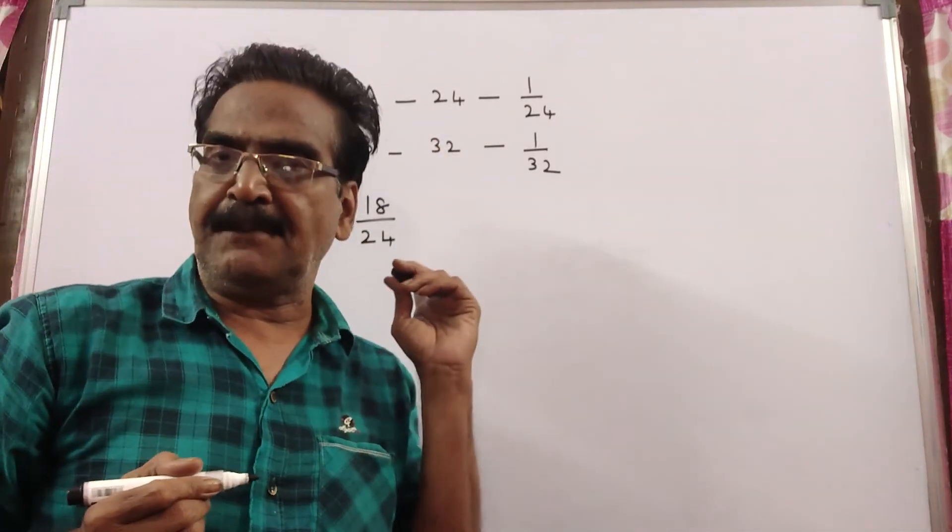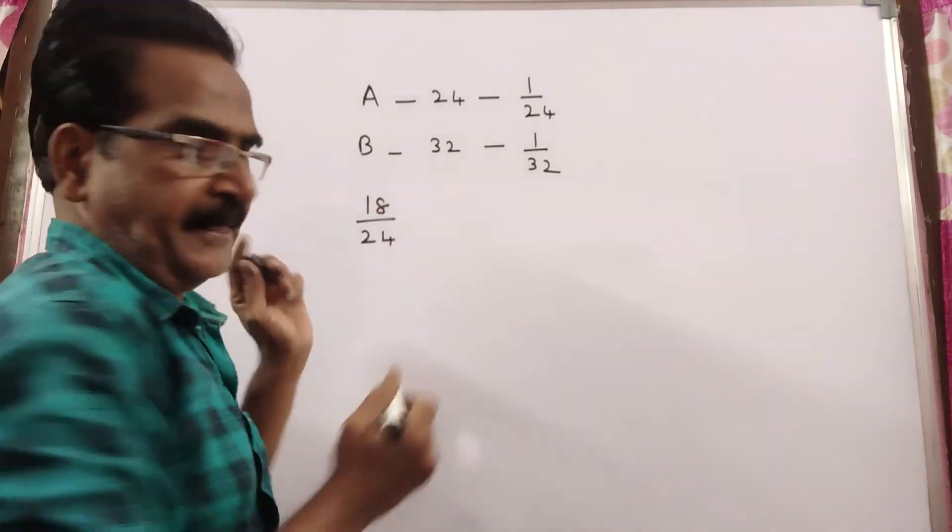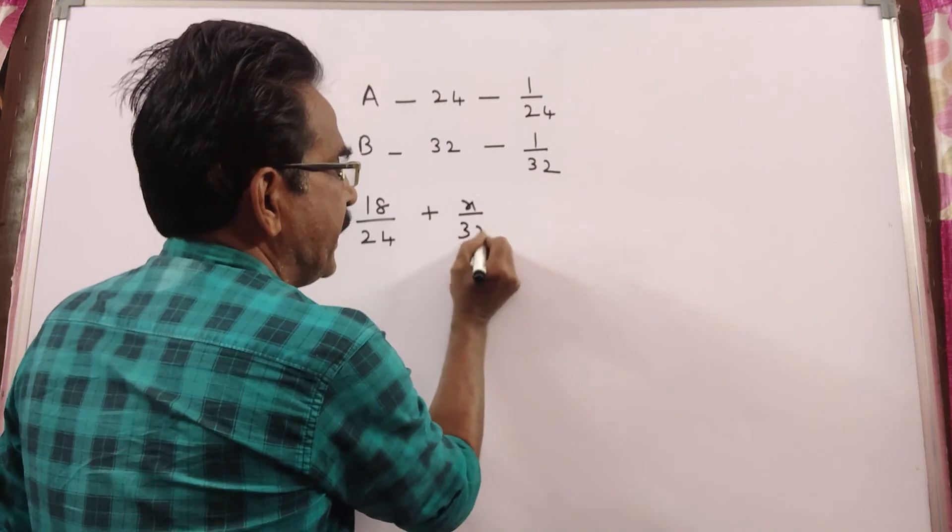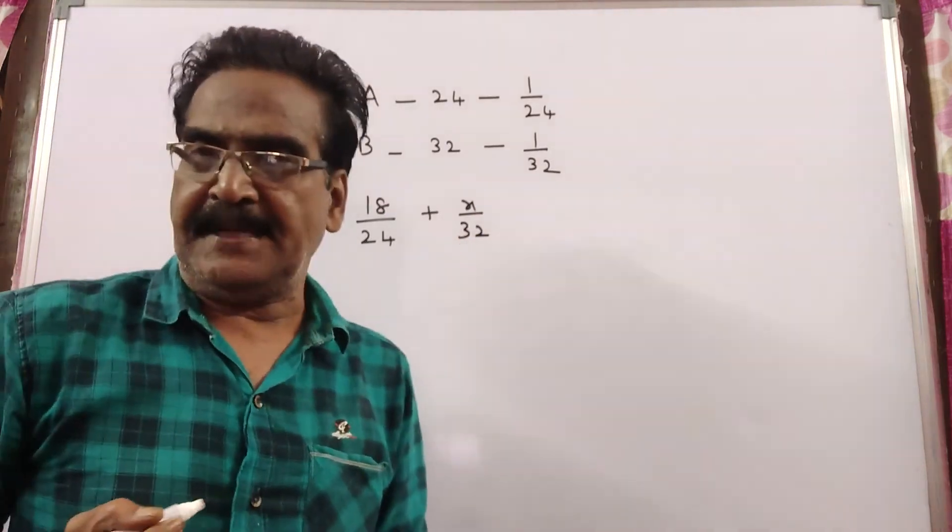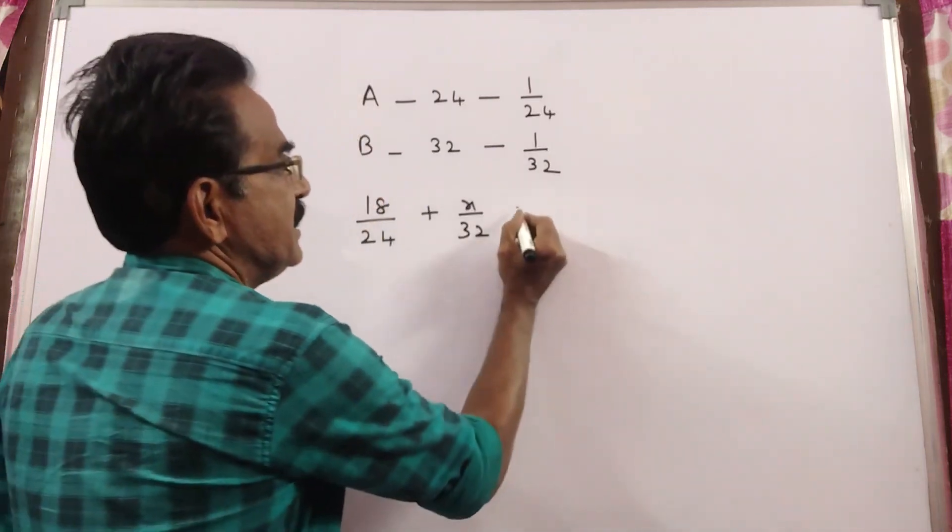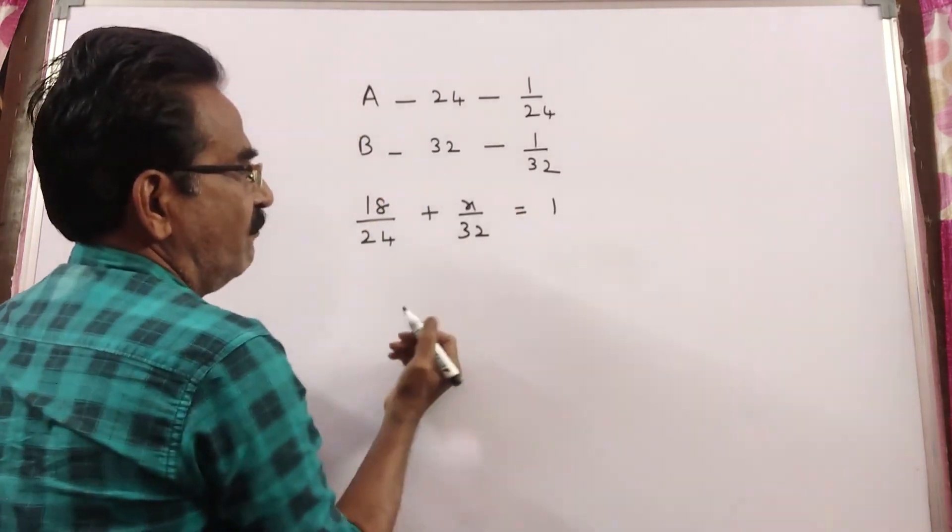So, the work done by pipe A in 18 minutes and the work done by pipe B in X minutes. After X minutes, pipe B was stopped. This is equal to total work 1.